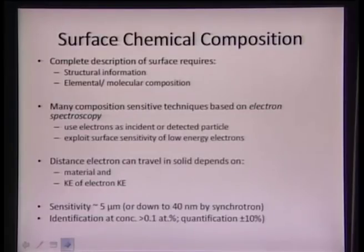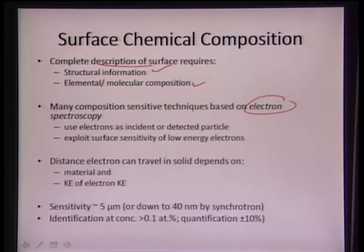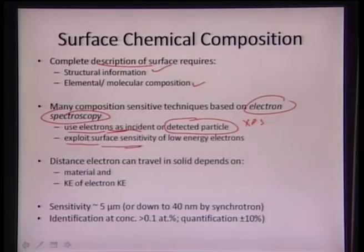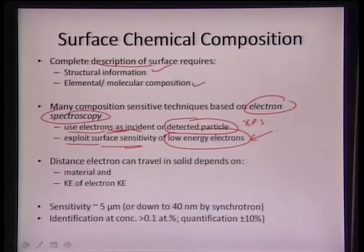For a complete description of surface chemical composition, we need structural information and elemental or molecular compositions. Techniques dependent on electron spectroscopy such as ESCA utilize X-rays, while other techniques use electrons as the incident beam. In XPS, the detected particles are electrons — low energy electrons — and we exploit their surface sensitivity. Low energy electrons such as Auger electrons or photoelectrons limit interaction with the material to the order of a few angstroms or nanometers, giving very high surface sensitivity.